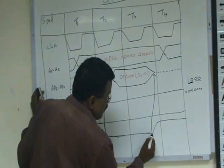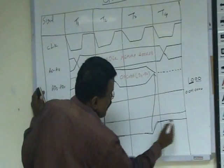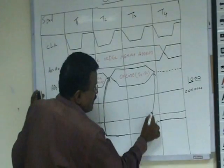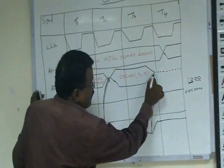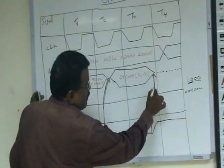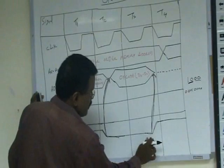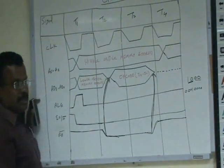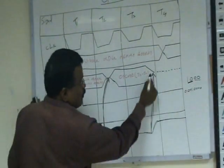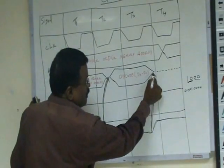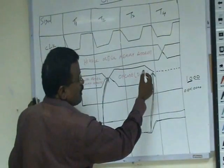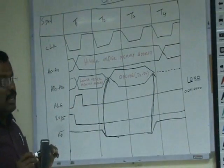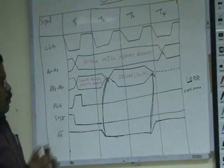During the third T-state, the read bar signal goes high again. Between the second T-state and the third T-state, the opcode is available on the data bus. So before it goes high — before the third T-state — this opcode or instruction code should be moved into the instruction register of the microprocessor.